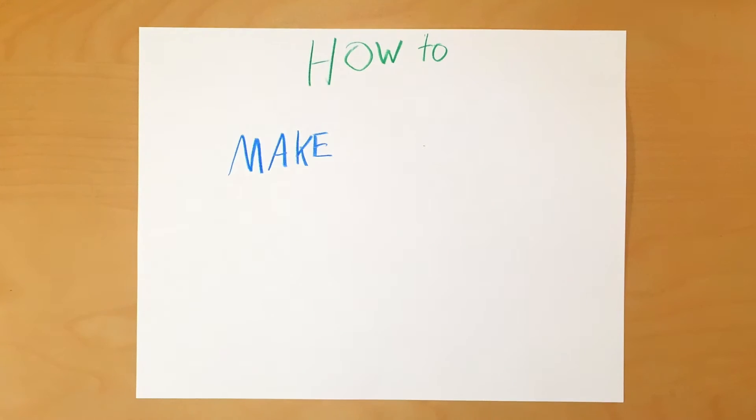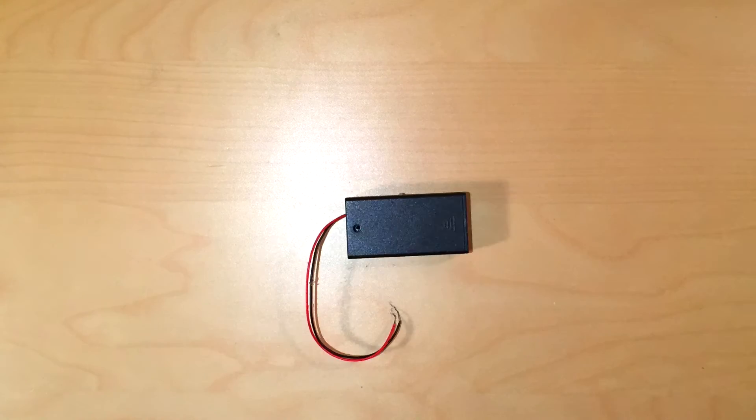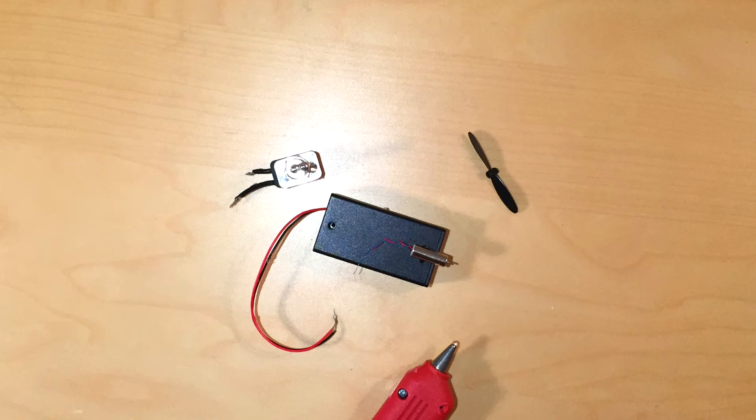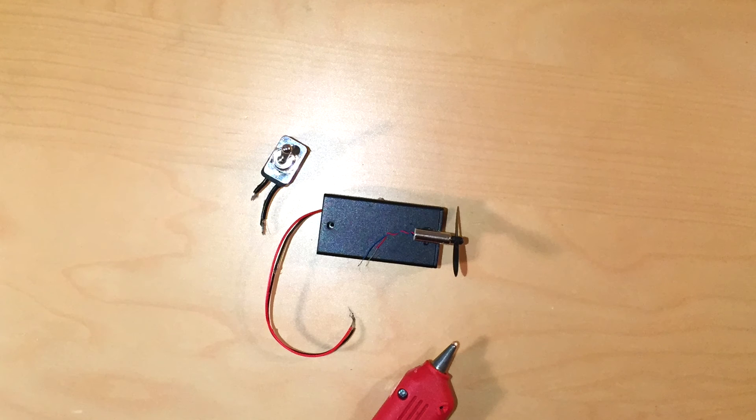Now let's go over how to actually make the vehicle. Hot glue the motor to the front and center of the battery pack. Make sure that the motor is hanging over the front of the chassis so that the propeller has enough room. Then attach the propeller to the shaft of the motor.